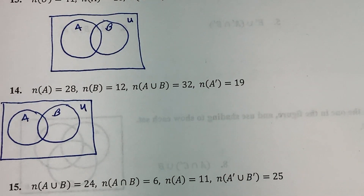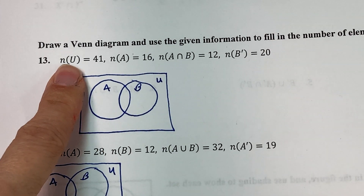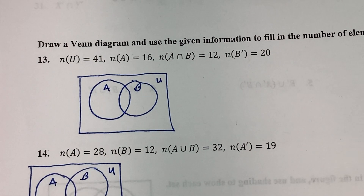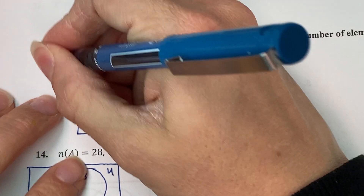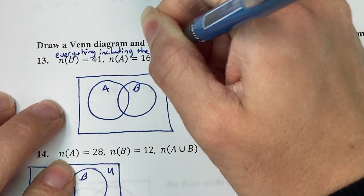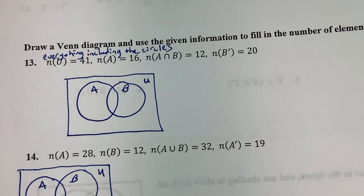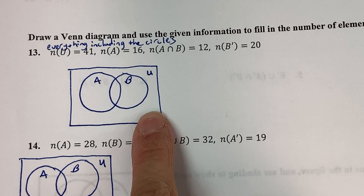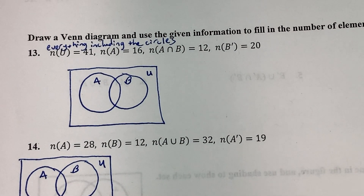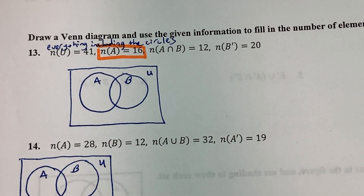Let's go ahead and start with number 13. In previous videos I outlined a good strategy, which is to always start with the intersections of the Venn diagram. Here it says the number of elements in the universal set is 41, and that means everything including the circles. Remember, even though it looks like U is just the outer region, U is the box which includes everything within it. So I'm not going to write 41 in the outer region only. I know the number of elements in A is 16, but I can't do anything with that yet because some of those elements are in the intersection region as well.